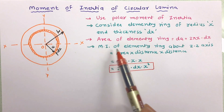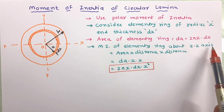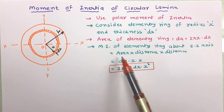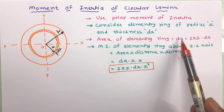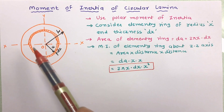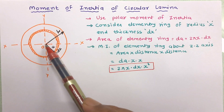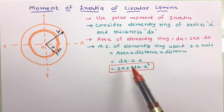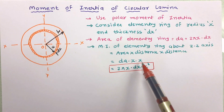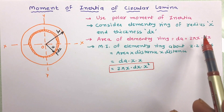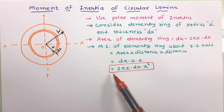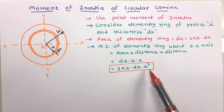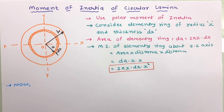The moment of inertia of this elementary ring about the ZZ axis equals dA multiplied by the distance squared. The distance of this elementary strip from the ZZ axis is x, so it becomes dA·x² = 2πx·dx·x² = 2πx³dx. Substituting the value of dA gives this expression.